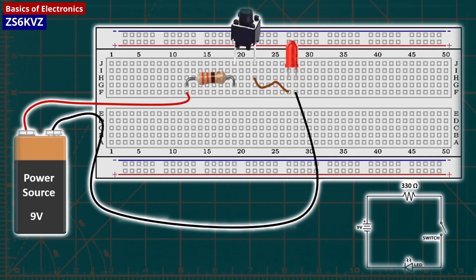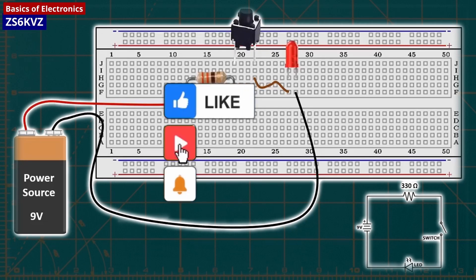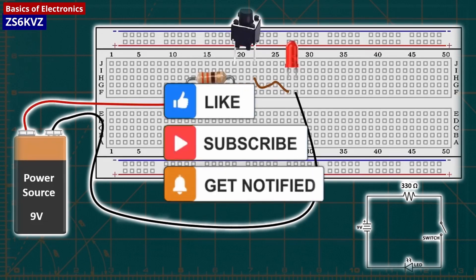The schematic shows that the 330 ohms resistor, LED, and switch are all connected in series with the 9V battery. When the circuit is built, the LED can be turned on and off with the switch.